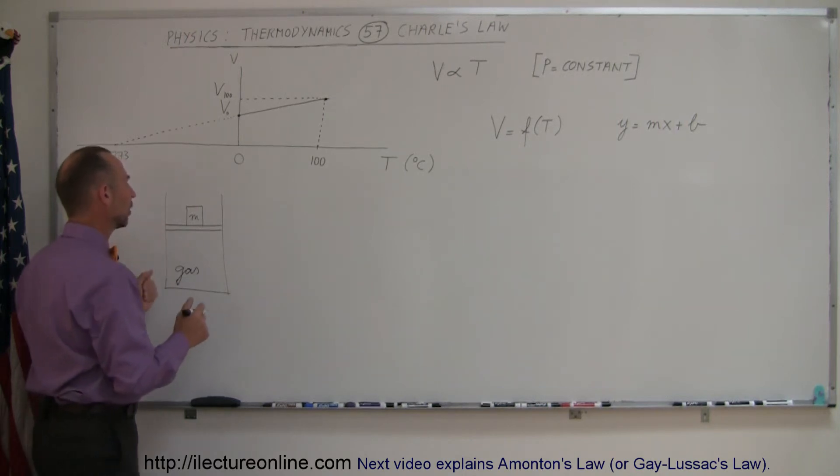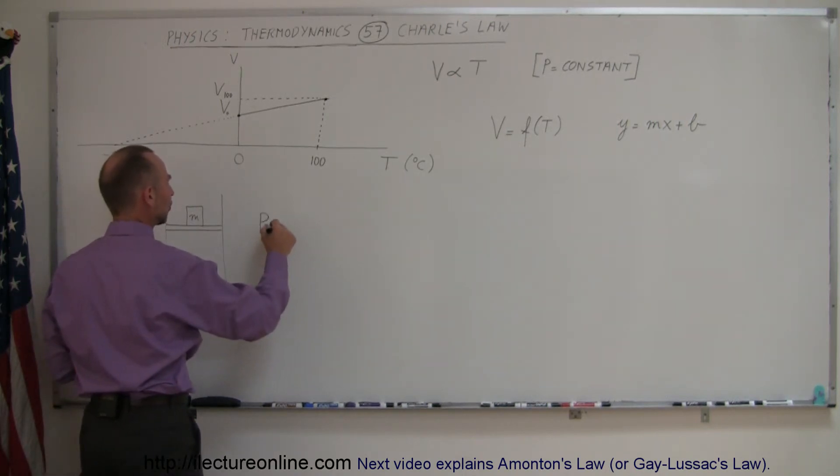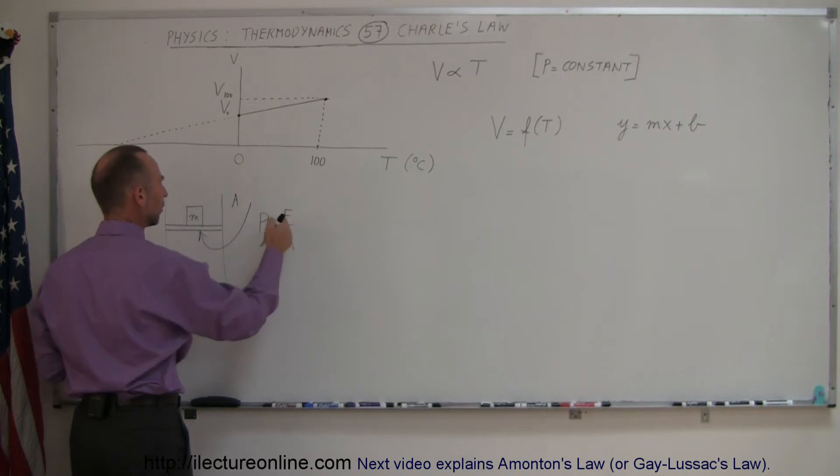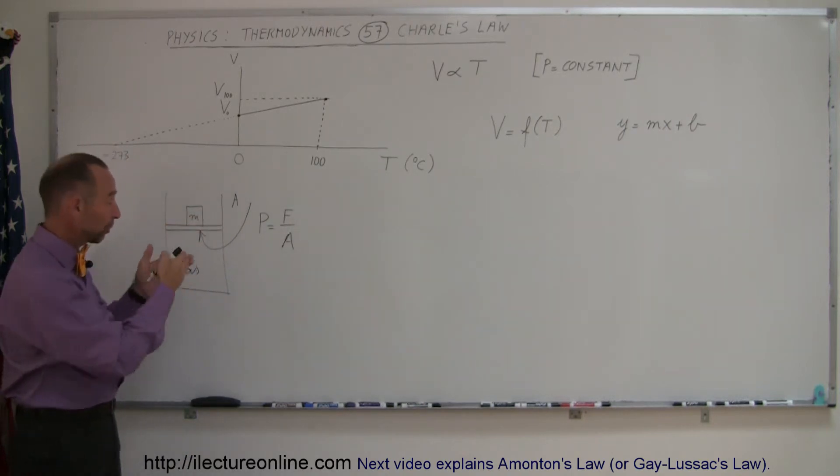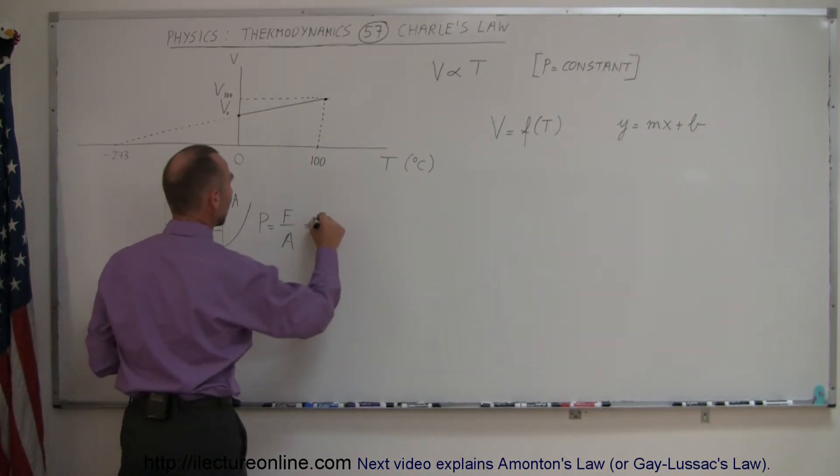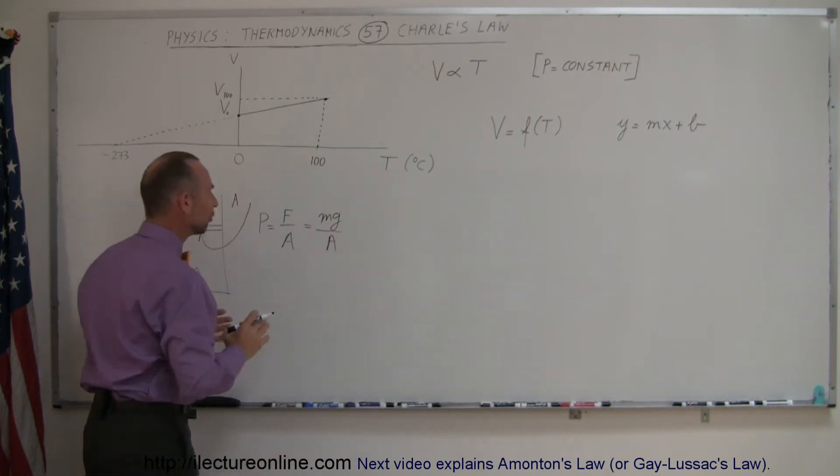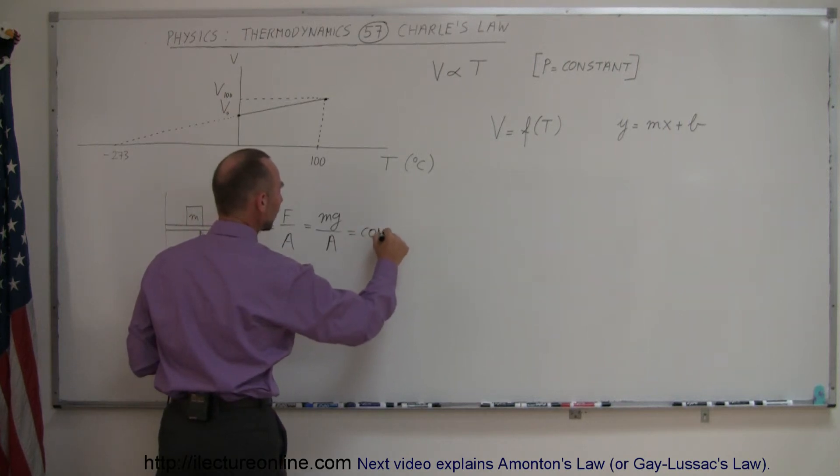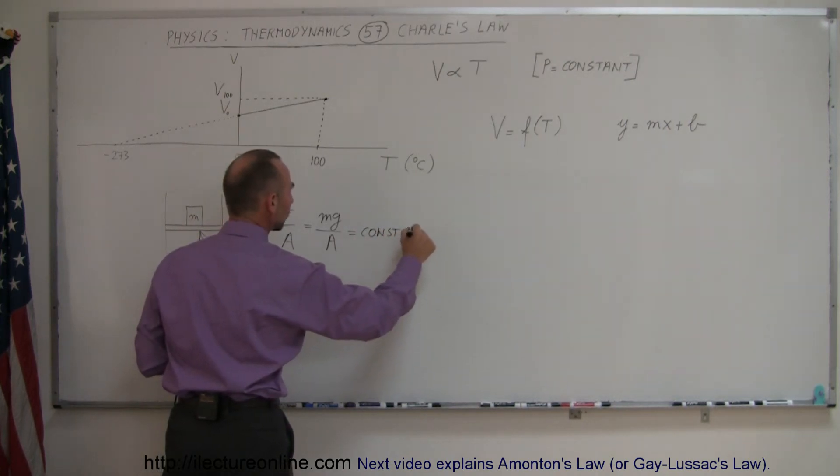And of course, it's caused by the pressure. The pressure is equal to the force divided by the area. And the piston would have a cross-sectional area A. The force would be provided by the mass put on top of the piston. So that would be M times G for the weight divided by the area. And so, by keeping that as a constant, they could see the relationship of how the volume would change with temperature.